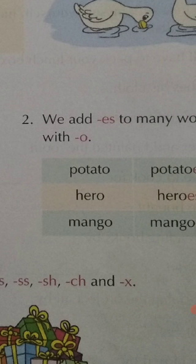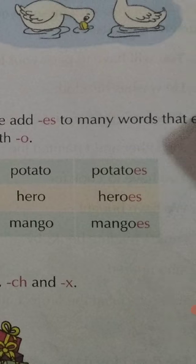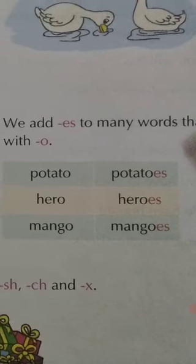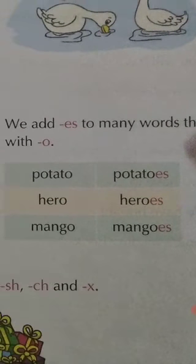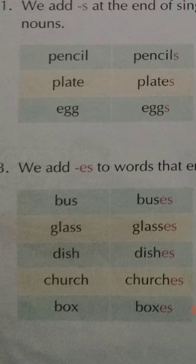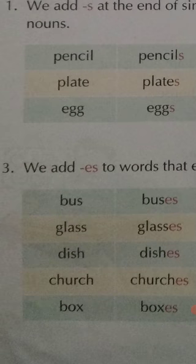What is your second rule? We add ES to words ending in O. For example, potato–potatoes, hero–heroes, mango–mangoes. You will consult another book and you will find many more words like these.